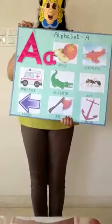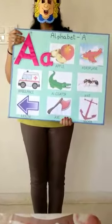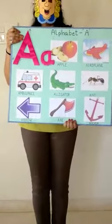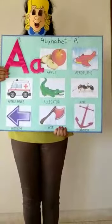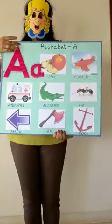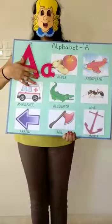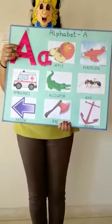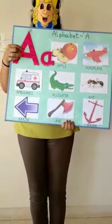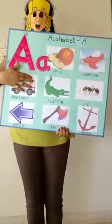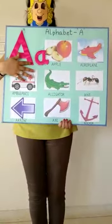Today we are going to learn the letter A. A says, ah. How do we write letter A? First climb the mountain, then go down the mountain, and there is a bridge in the mountain. This is the uppercase letter A, and this is the lowercase letter A.